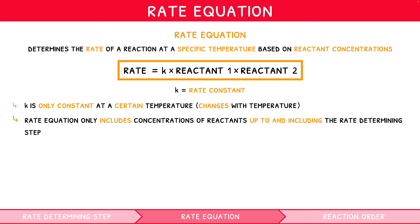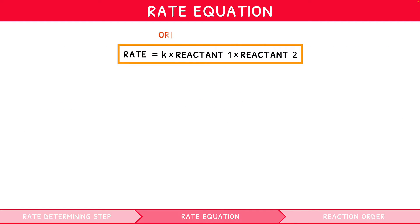An important relationship exists between the concentration of a reactant and the overall rate of reaction. This is termed the order of a reactant. A reactant can have one of four orders: zero order, first order, second order, and third order.